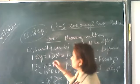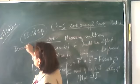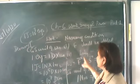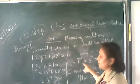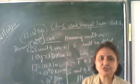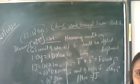Let us find the dimensional formula of work. Work is force into displacement. Force has dimensions M L T to the power minus 2, multiplied by L gives M L squared T to the power minus 2. So the dimensional formula of work is M L squared T to the power minus 2.